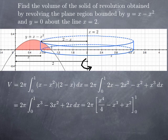An antiderivative is easy to obtain: x to the fourth over 4 minus x cubed plus x squared. We evaluate that between 0 and 1. The value at 0 is 0, and at 1 we get 1 fourth minus 1 plus 1, so simply 1 fourth. We multiply that by 2π, so we obtain π over 2.